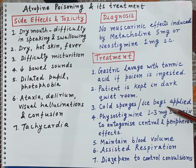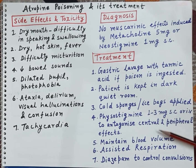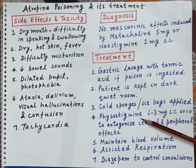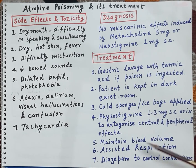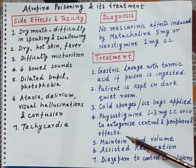Since atropine causes a rise in body temperature, cold sponges and ice packs should be applied to the skin of the patient. Physostigmine, an anticholinesterase, crosses the blood-brain barrier and antagonizes both the central and peripheral effects of atropine poisoning. Physostigmine 1 to 3 mg subcutaneous or intravenous is administered as an antidote.